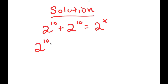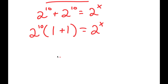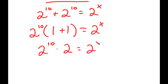If I factor out 2 to the power of 10, I get 2 to the power of 10 times — well, 2 to the power of 10 divided by 2 to the power of 10 is 1 — so I get 2 to the power of 10 times 1 plus 1 is equal to 2 to the power of x. Now, 1 plus 1 is equal to 2, so I get 2 to the power of 10 times 2 is equal to 2 to the power of x.